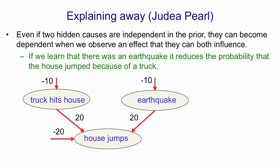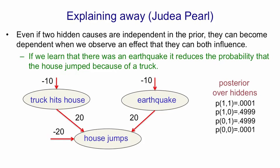So assuming there was an earthquake reduces the probability that the house jumped because a truck hit it. We get an anti-correlation between the two hidden causes when we've observed the house jumping. Notice in the model itself, in the prior, these two hidden causes are quite independent. So if the house jumps, there's basically an even chance it was because of a truck or because of an earthquake. The posterior actually looks something like this: there are four possible patterns of hidden causes given that the house jumped. Two of them are extremely unlikely — namely that both a truck hit the house and there was an earthquake, or that neither happened. The other two combinations are equally probable and form an exclusive OR. We have two likely patterns of causes which are just the opposites of each other. That's explaining away.